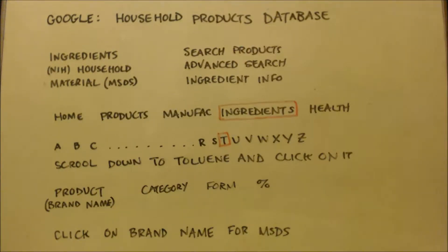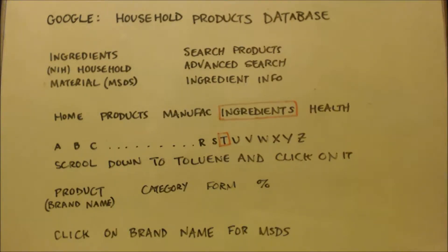This is John Black, super chemist, on my John Black Super Teacher channel. It's going to be a short video just showing you how, if you're looking for a certain chemical, how do you find it in a product.